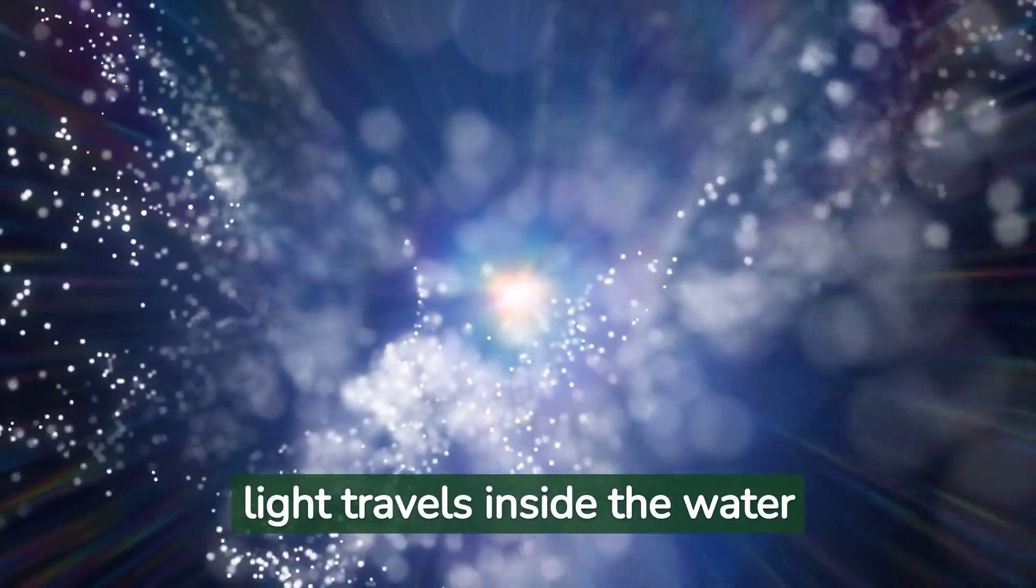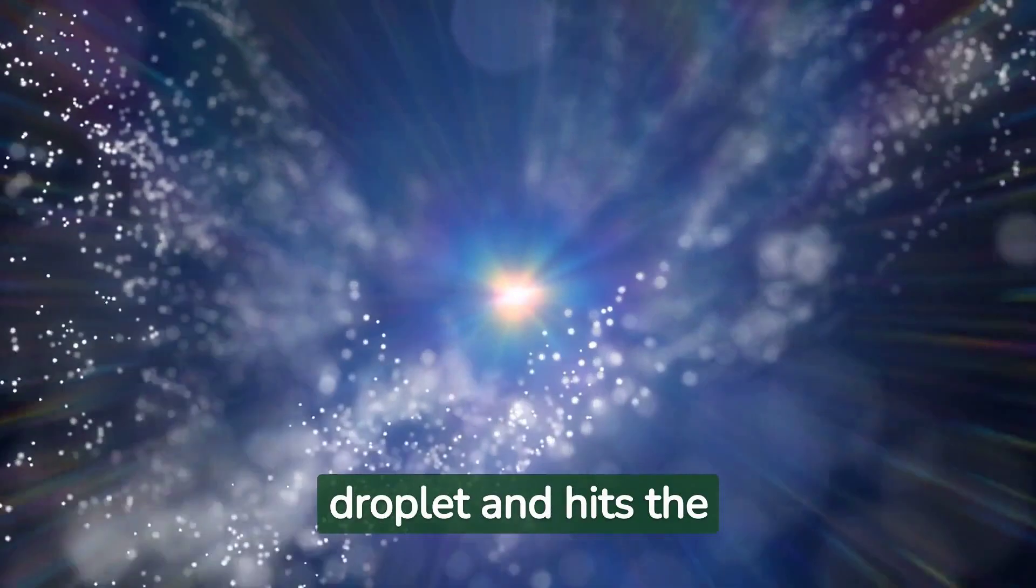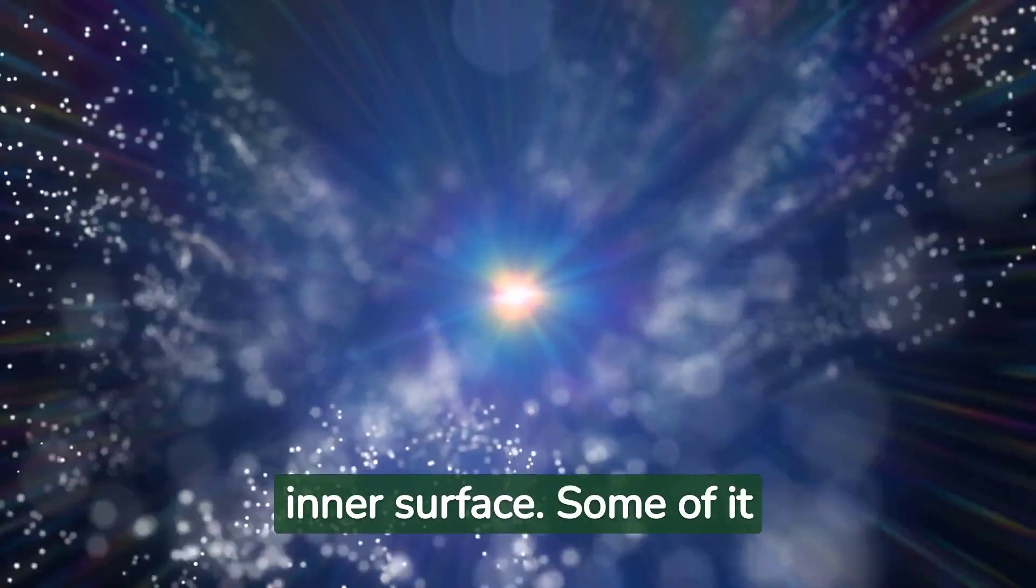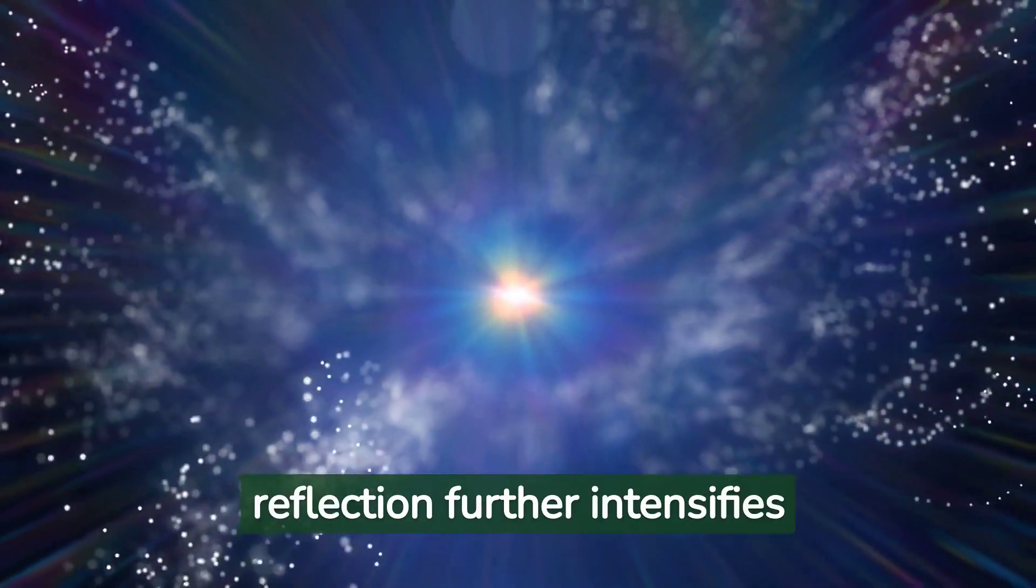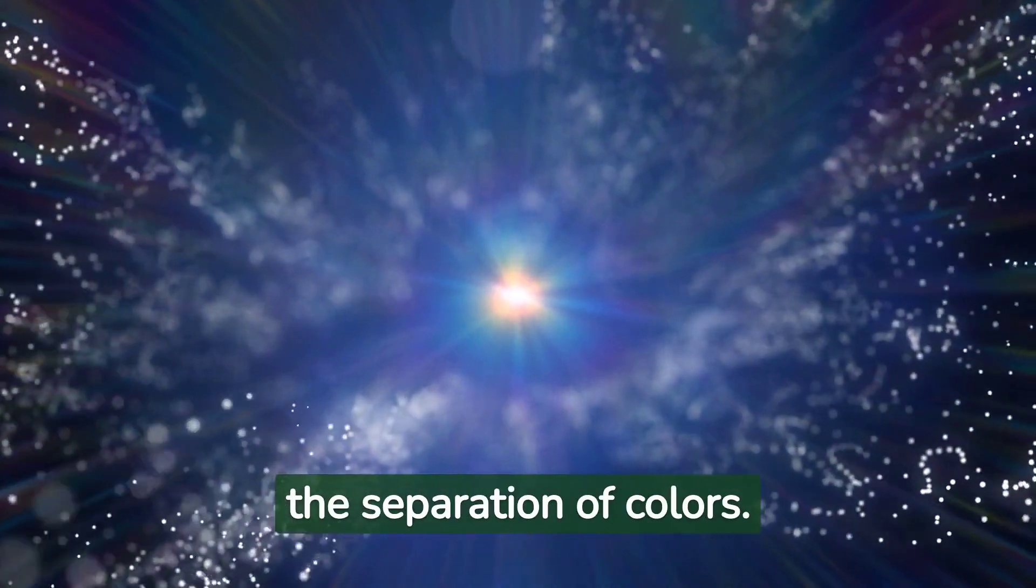Now, the dispersed light travels inside the water droplet and hits the inner surface. Some of it escapes out, but some of it reflects back into the droplet. This reflection further intensifies the separation of colors.